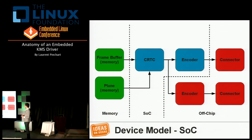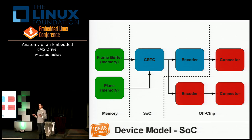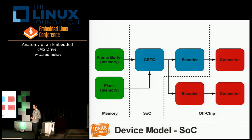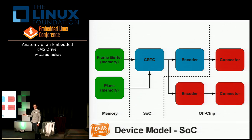On the embedded side: memory is memory. The CRTC is what you have on your SoC — the display controller. For encoders, it's a mixed area: they can be inside the SoC or on the board. Connectors are obviously not part of the SoC — they're on the board and off-chip. It's a pretty simple model that can represent most of today's hardware, though there are corner cases like deep pipelining when a camera interface in your SoC pipelines data to your display controller.